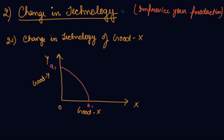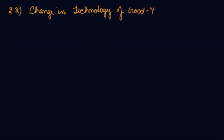If only the technology of X changes — meaning you have improvised only the technology of X — the production of Y will remain the same but the production of X will increase. So your production possibility curve will not change on the Y-axis, but X will change. Efficient technology for good X raises productivity of good X, so more of good X can be produced with the same resources. The PPC curve will rotate from AB1 to AB2.